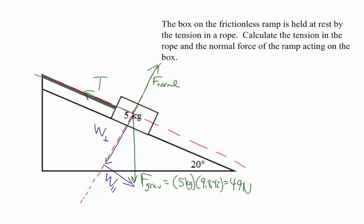To break the force of gravity — 49 newtons — into components, we need to know the angle inside that right triangle. We need to figure out whether the parallel component is opposite or adjacent to the 20-degree angle.